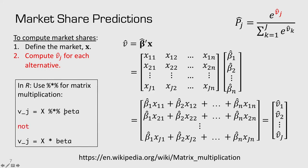In R, matrix multiplication is a single line of code using the percent-star-percent operator. With this one line we compute the whole vector of observed utility values: our matrix x matrix-multiplied by the coefficients from our model. Keep in mind that just using a star without the percent signs is a different operation and will not produce the result we want.